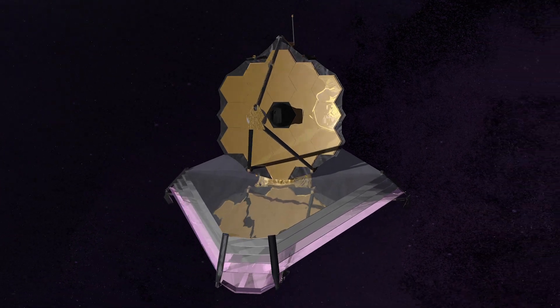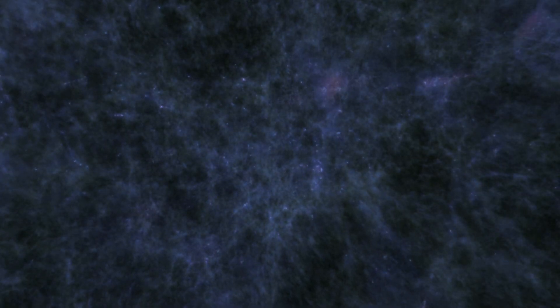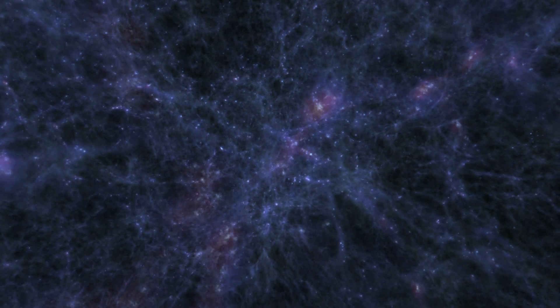One of the key things that the James Webb Space Telescope is designed to do is detect the very first stars and galaxies that were born in the very early universe. This is a part of the universe that we haven't seen at all yet. We don't know what's there.